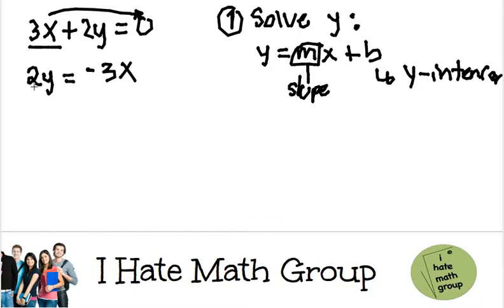Finally, since I want y by itself, I'm going to divide by 2 on both sides and I get y equals negative 3x over 2.